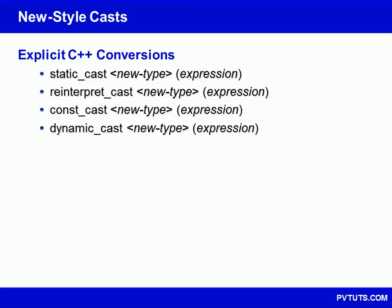These casts are static, reinterpret, const, and dynamic casts. As seen here, their format is to follow the cast's name with the new type enclosed in angle brackets, and thereafter the expression to be converted in parentheses. These casts allow more precise control over how conversions should be performed, which in turn makes it easier for the compiler to catch conversion mistakes.